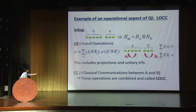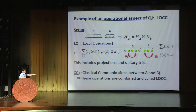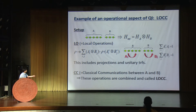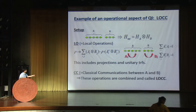LO stands for local operations, and CC for classical communications. The setup is our usual one: the total Hilbert space is factorized into H_A times H_B, a direct product. We have a spin system for A and spin system B. A local operation is an operation which only acts on A or B — we can do some unitary transformation for A, or some projection measurement, or some generalization of that, acting only on A or B independently.